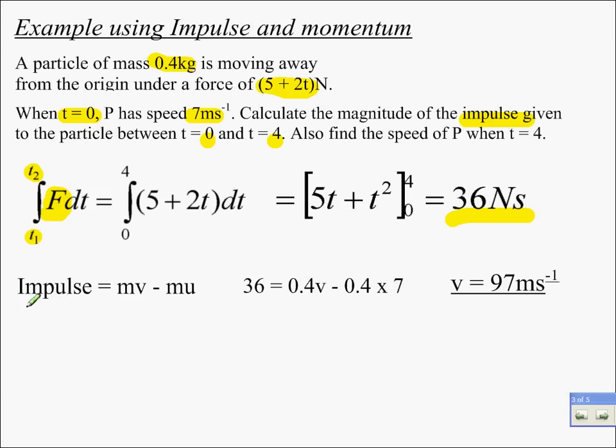we look at that here, and we get an impulse of 36 newtons per second. Impulse is changing momentum, as we've seen in mechanics 2. So, using that, we get velocity as 97 metres per second.